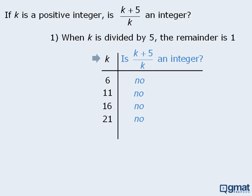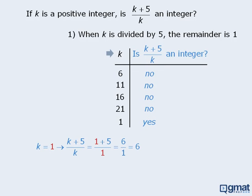Can we conclude that statement 1 is sufficient? It certainly looks that way. Unfortunately, we are forgetting an important value for k. If k divided by 5 gives a remainder of 1, then k could also equal 1, since 1 divided by 5 equals 0 with a remainder of 1. If k equals 1, then (k+5)/k simplifies to 6, and 6 is an integer. So when k equals 1, the answer to our target question is yes. Now that we have two conflicting answers, we can be certain that statement 1 is insufficient.